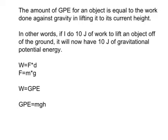Now we're talking about the amounts of gravitational potential energy. The amount of gravitational potential energy for an object is equal to the work done against gravity in lifting it to its current height. So we're talking about not only the weight of the object, but also the height to which you lift it. If you do 10 joules of work to lift an object off the ground, it will have 10 joules of gravitational potential energy. If you do 100 joules of work, it has 100 joules of gravitational potential energy — those two things are always equal.